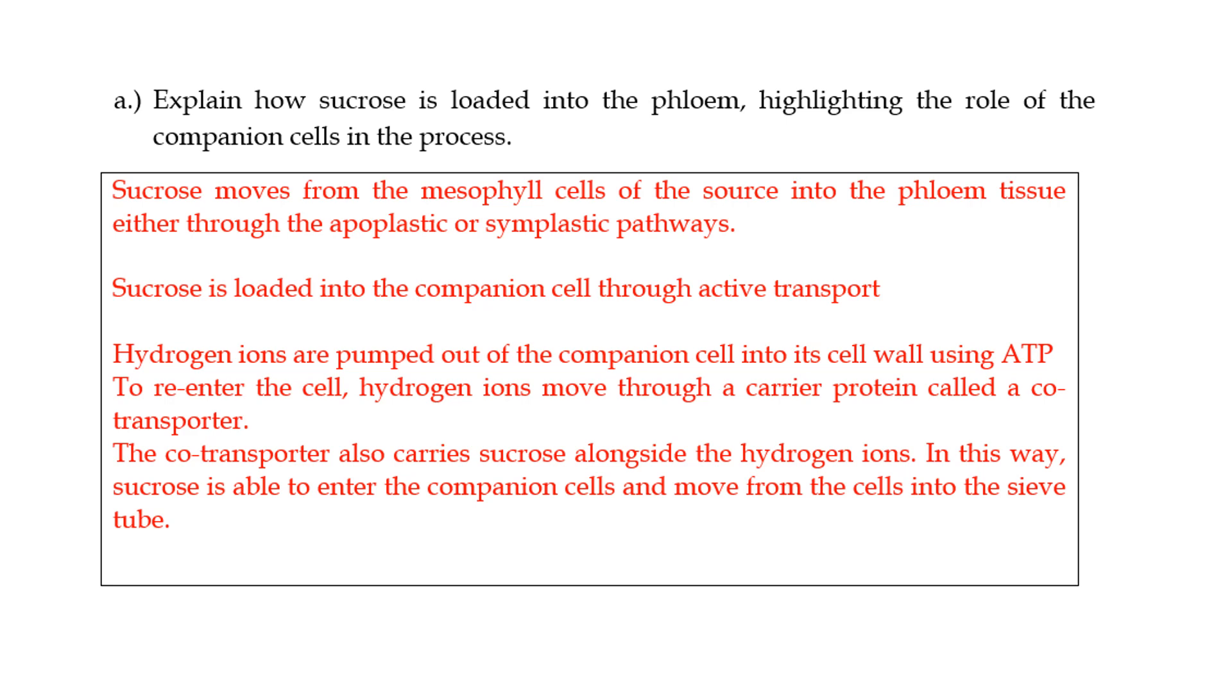Second thing that you then say is that the companion cells play a key role because they have hydrogen pumps. The companion cells are fully alive, by the way. They have cell organelles and all the pizzazz that comes with being a cell. Whereas with the sieve tubes, which make up the phloem, they are not exactly alive, but they do have some organelles that also help them with their function. So in this case, the companion cells are the ones that allow for the loading of sucrose.